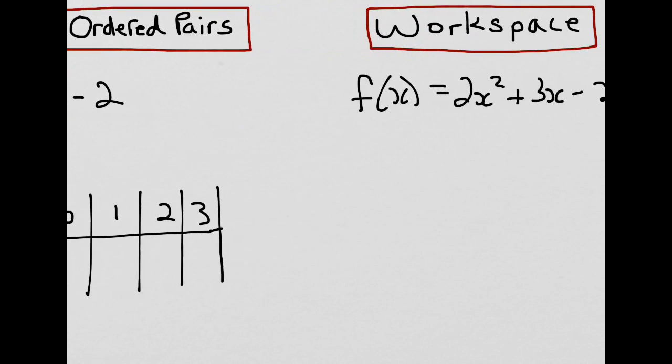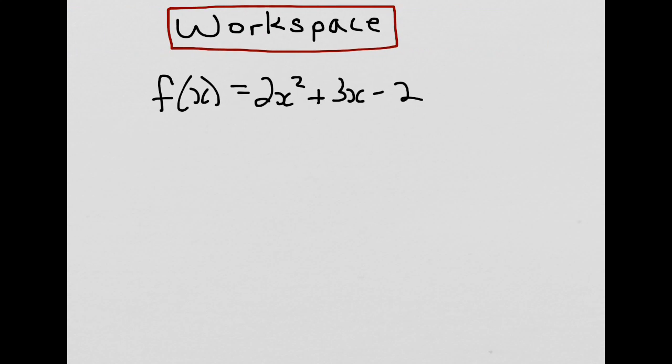Alright, let's go to our workspace to do some calculations. One of the values we selected for x was 0, which is a good one to start with because it's a fairly straightforward calculation. So, f would be 2 times 0 squared plus 3 times 0, minus 2.